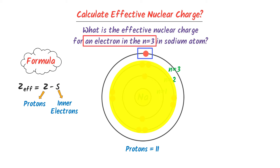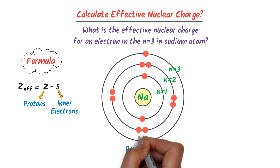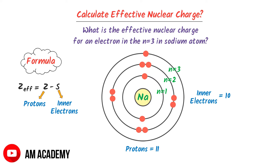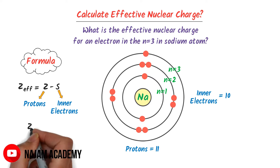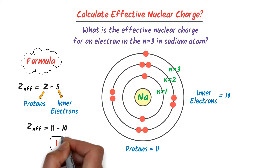All the electrons below this shell are considered inner electrons. Counting them: 1, 2, 3, 4, 5, 6, 7, 8, 9, 10 — so there are 10 inner electrons present in this sodium atom. Thus S equals 10. Effective nuclear charge equals 11 minus 10, so the effective nuclear charge for this electron is 1.